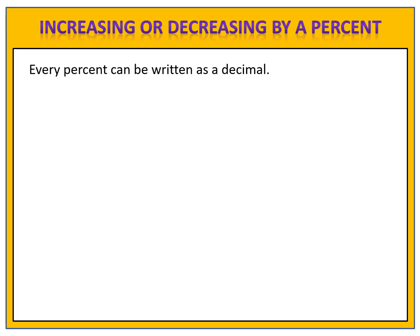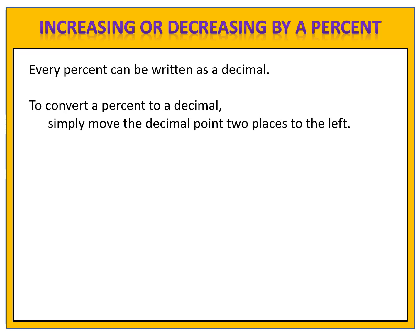First of all, every percent can be written as a decimal. To convert a percent to a decimal, we simply move the decimal point two places to the left. Suppose we have the number 12%. We want to rewrite this as a decimal so that we can use it in mathematical calculations.